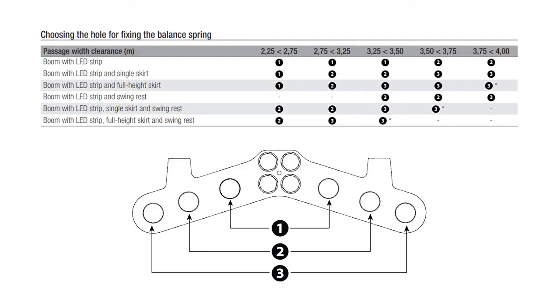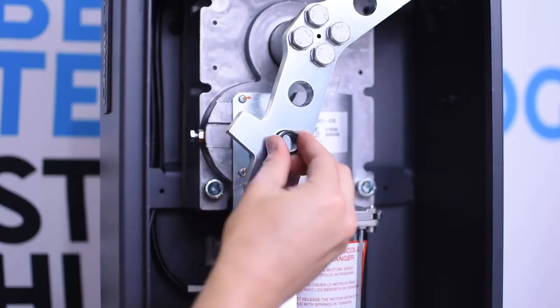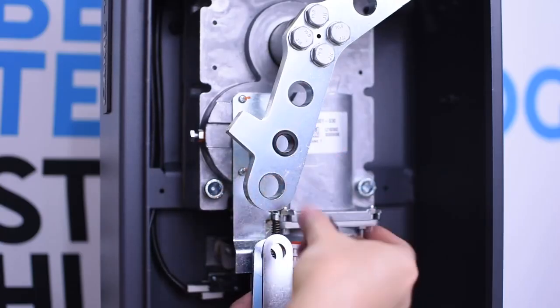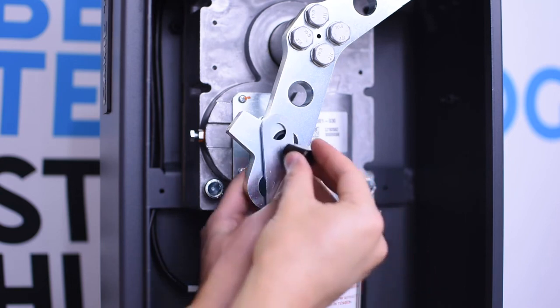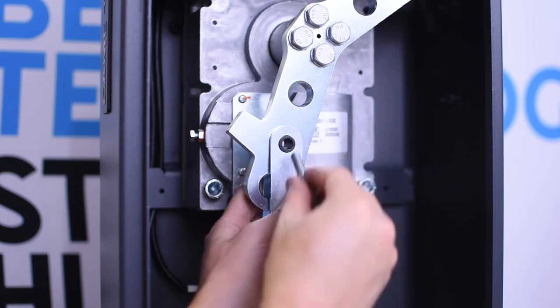Depending on the length of the boom and accessories installed on it, you can install the spring on either of the three holes. The closer to the center the less force the spring is going to apply to the main shaft.